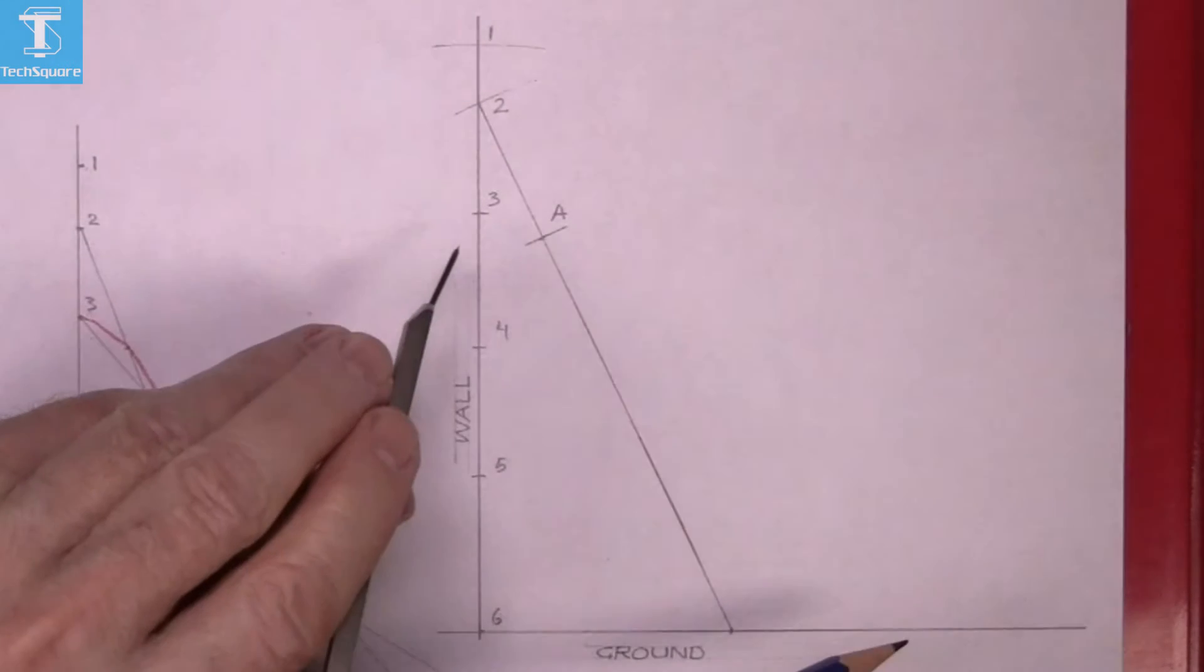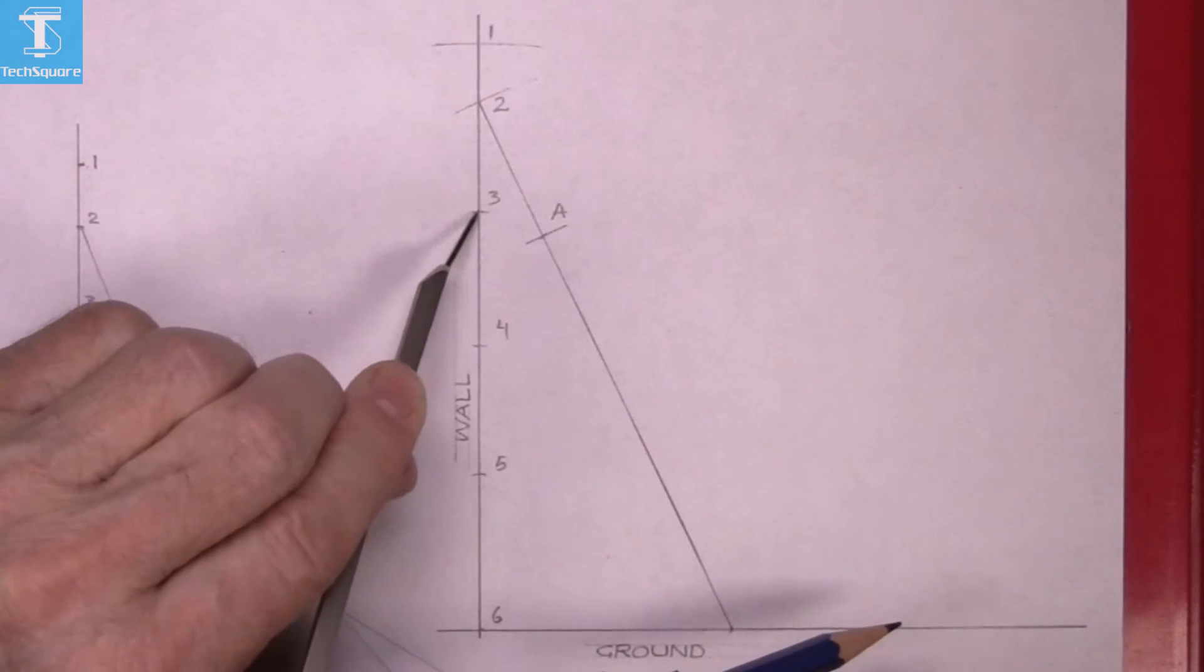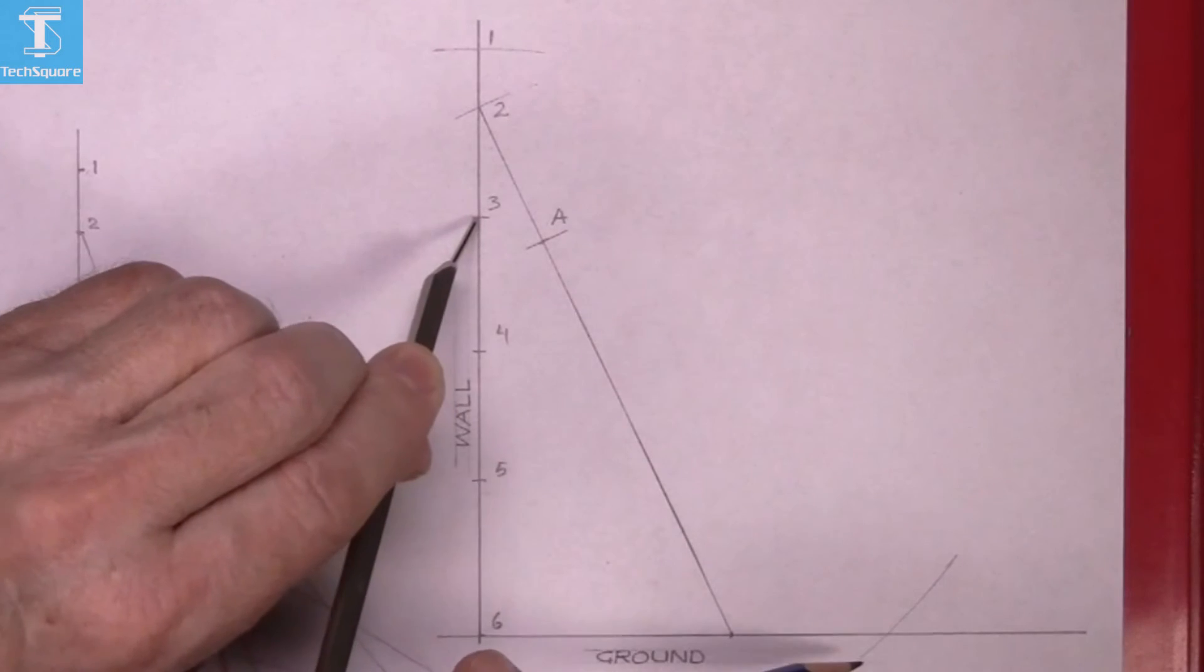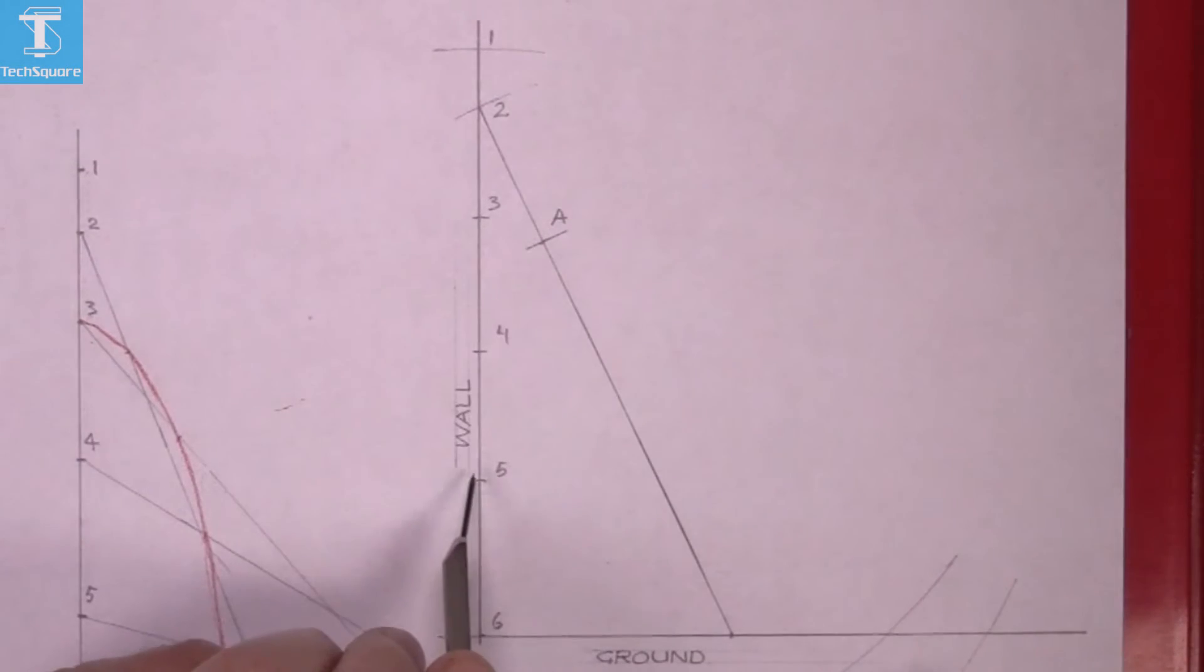So now with the compass set to the length of the ladder, mark where the bottom of the ladder would be from each of the intermediate positions you have marked.